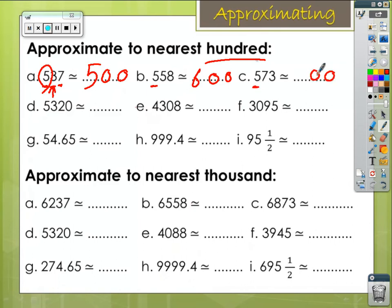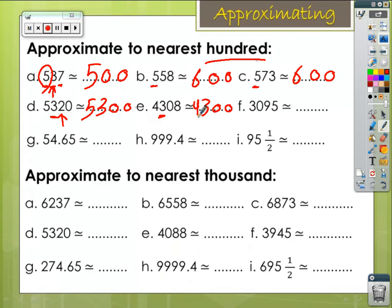In letter C: 7 is greater than 5, so increase 5 by 1 — it will be 600. Letter D: make all the numbers before it 0; 2 is less than 5, so 3 will keep its value. Letter E: 0 in the units and tens — 0 is less than 5, so 3 will keep its value; write the rest of the number. Letter F: 9 is greater than 5, so increase 0 by 1 — it's going to be 3100.